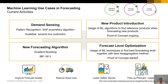In demand sensing, we've got our pattern recognition and SAP algorithms, which allow us to actually see all that data. One of the new ones is this idea of gradient boosting, which was released in IBP 1811, allowing us to improve forecasting, reduce stock outs, and lower safety stocks — which is what we all want to do. One of the main components of this is to try and free up time from planners' capacity to allow them to concentrate on better things.